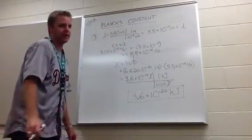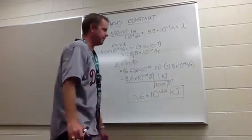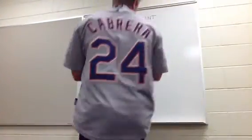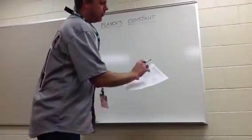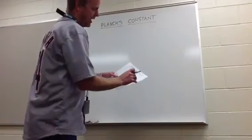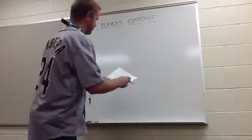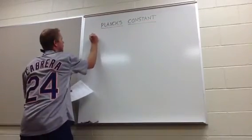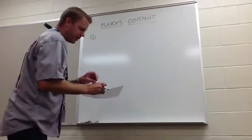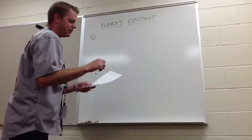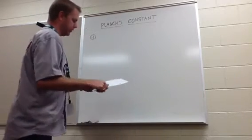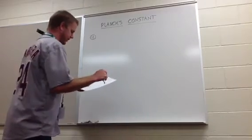This is about as hard as I can make it. Let's do one more — a hard one. I'm on the next page: 'more difficult calculations involving Planck's constant.' I'm going to pick number 4. Number 4 says: what is the wavelength in meters of a wave given that the energy is 3.61 times 10 to the negative 22nd kilojoules, and what color is it?